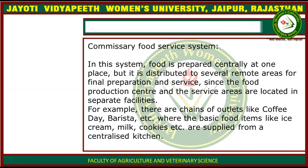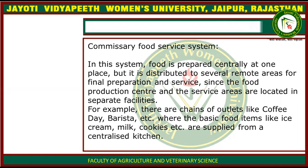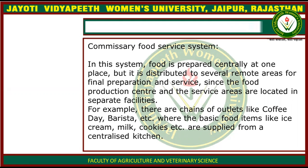In the commissionary system, food is prepared centrally at one place but it is distributed to several remote areas for the final preparation and service. The food production center and service area are located in separate facilities.